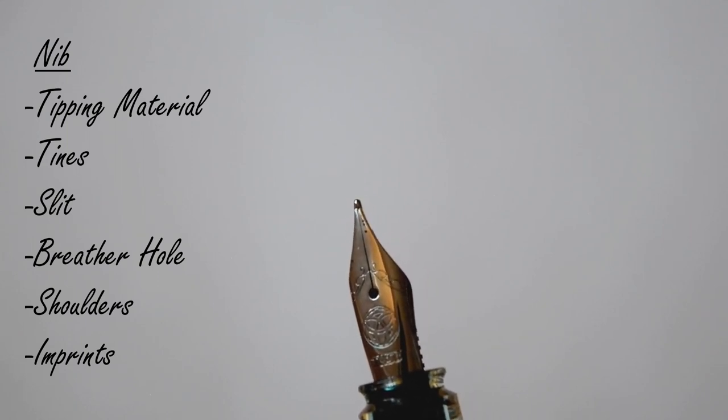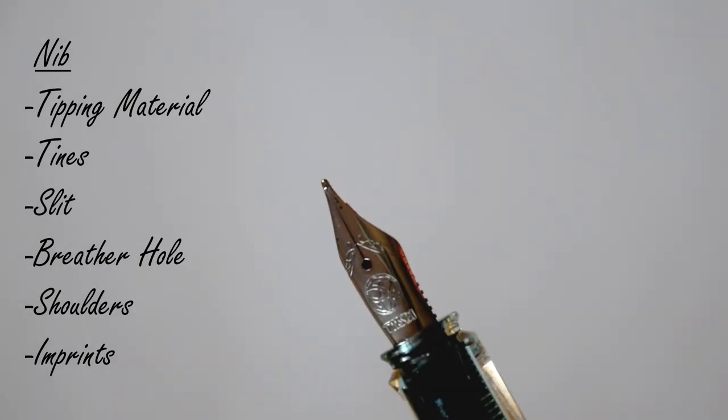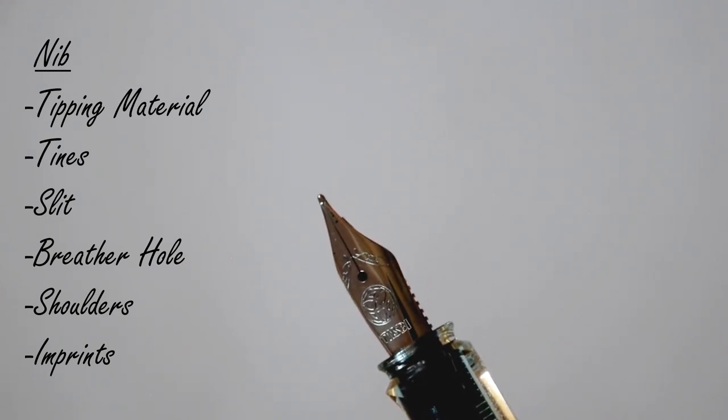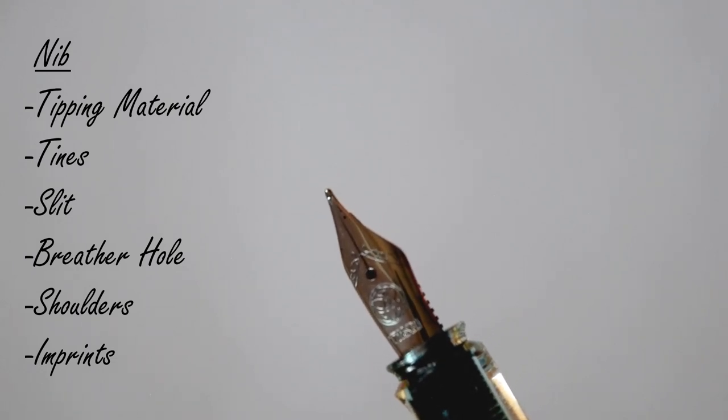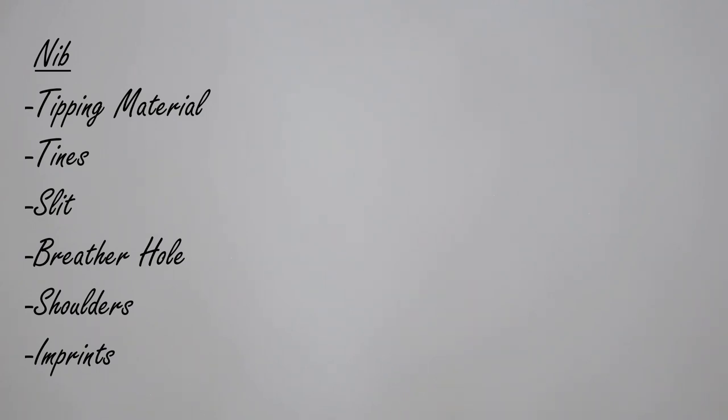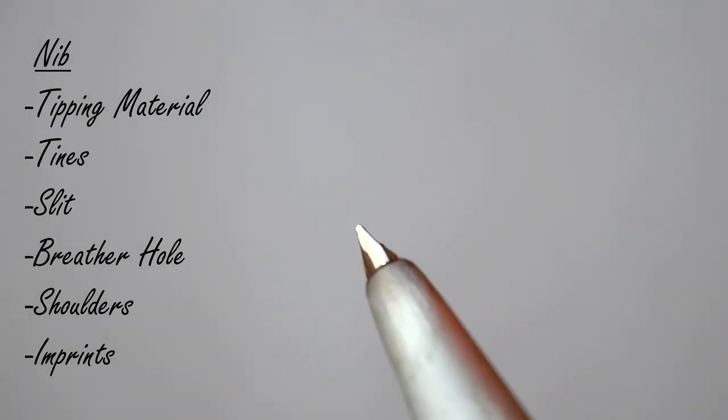Something I almost forgot to mention is that all of this was said in relation to a normal nib like this Twsbi nib, meaning a fully exposed nib. But there's also something that we call hooded nibs, like the nib that you find on the Lamy 2000, and in this case most of the nib is not exposed.